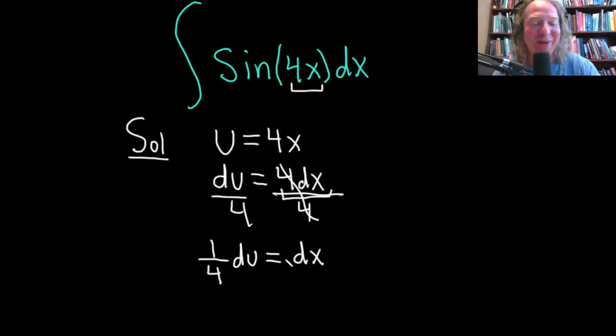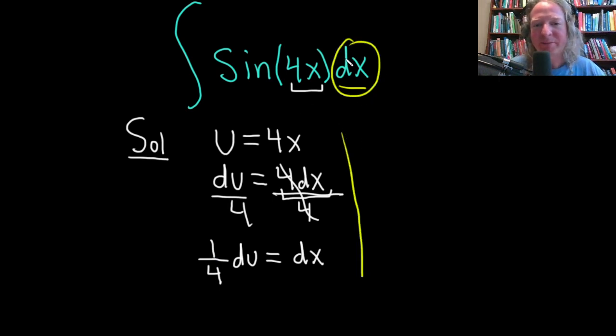All right, now it's perfect, right? Now it matches. We're good because we have dx, and we know that's 1/4 du. So let's rewrite our integral. This is going to be the integral of... So the dx, which I've circled, is right here. That's 1/4 du.